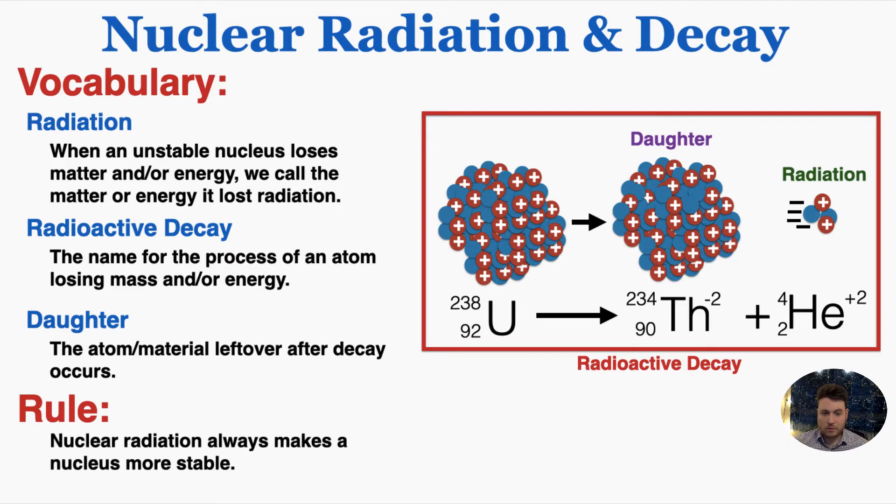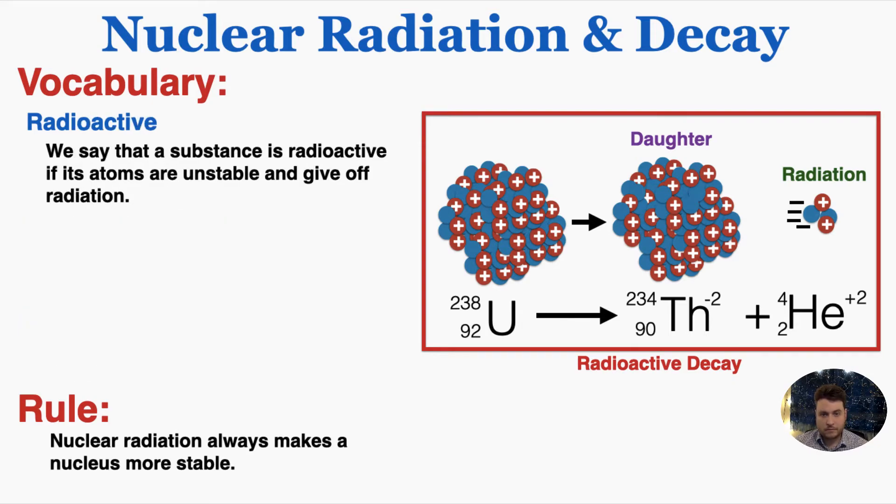As a rule, nuclear radiation always makes a nucleus more stable than it was before radiation happened. We call a substance radioactive if its atoms are unstable and give off radiation.